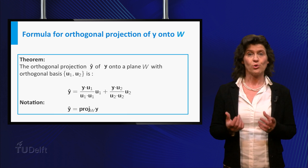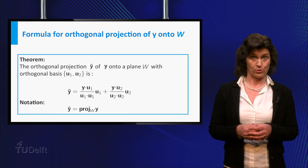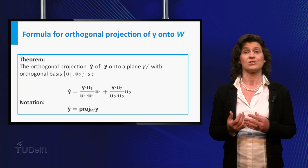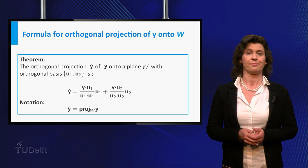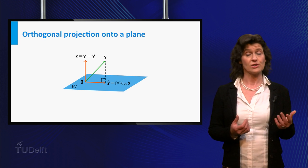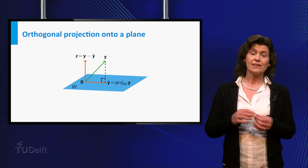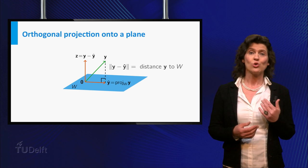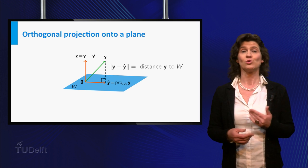As you have seen, it is important that U1 and U2 are orthogonal, but the result does not depend on the particular choice of U1 and U2. Another thing you immediately see in this construction is that the length of the vector Y minus Y hat is equal to the shortest distance from Y to the plane W.